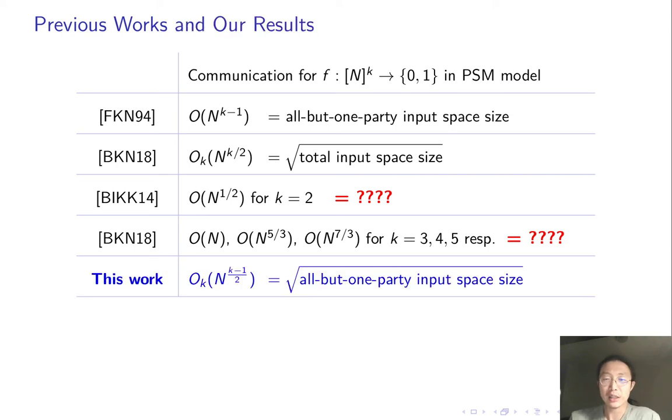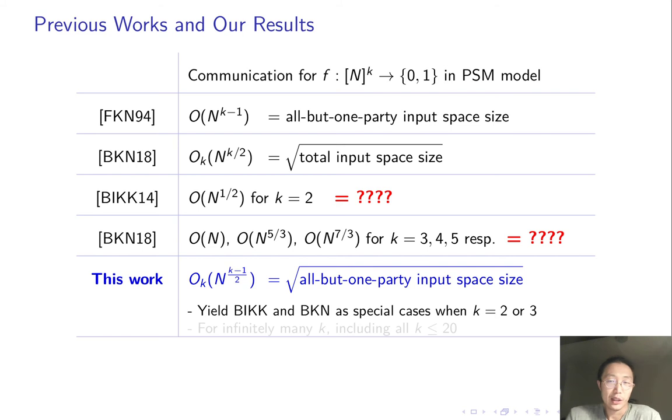Our result partially answers the question. We improved communication complexity to square root of all but one party input space size. When k equals 2 or 3, we match the previous upper bounds. Actually, we reproduce the BIKK and the BKN constructions.